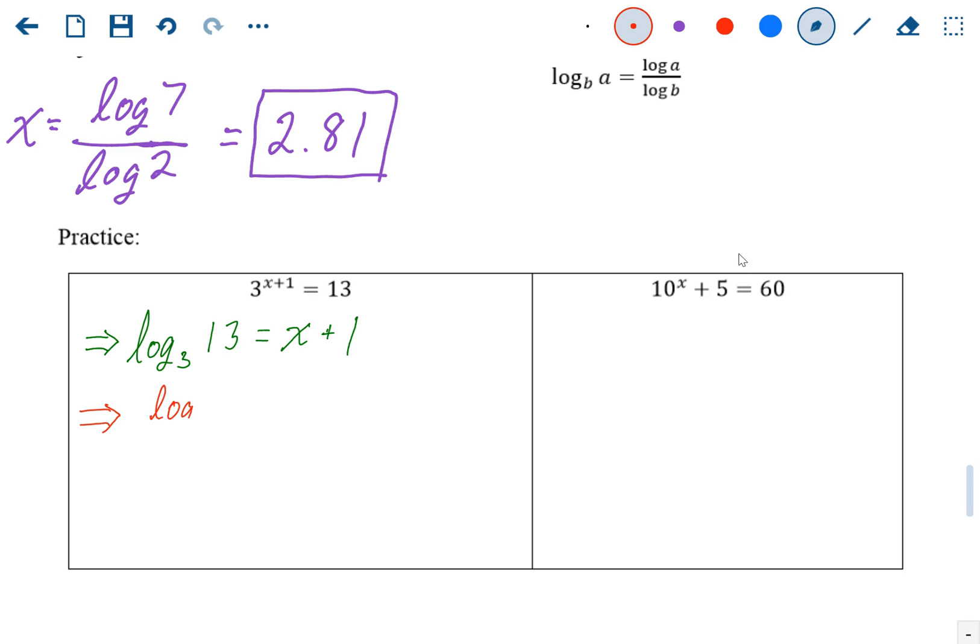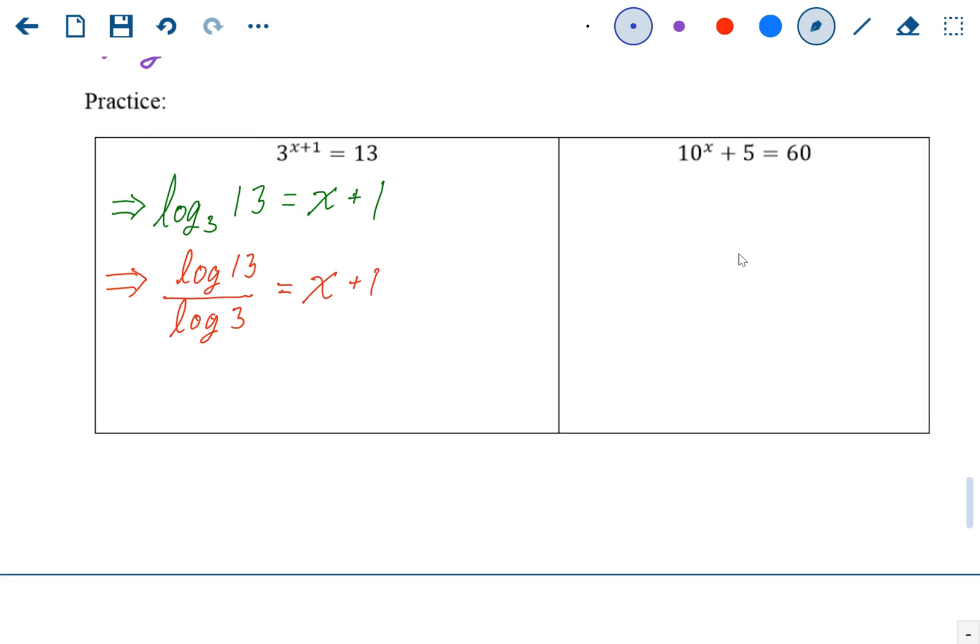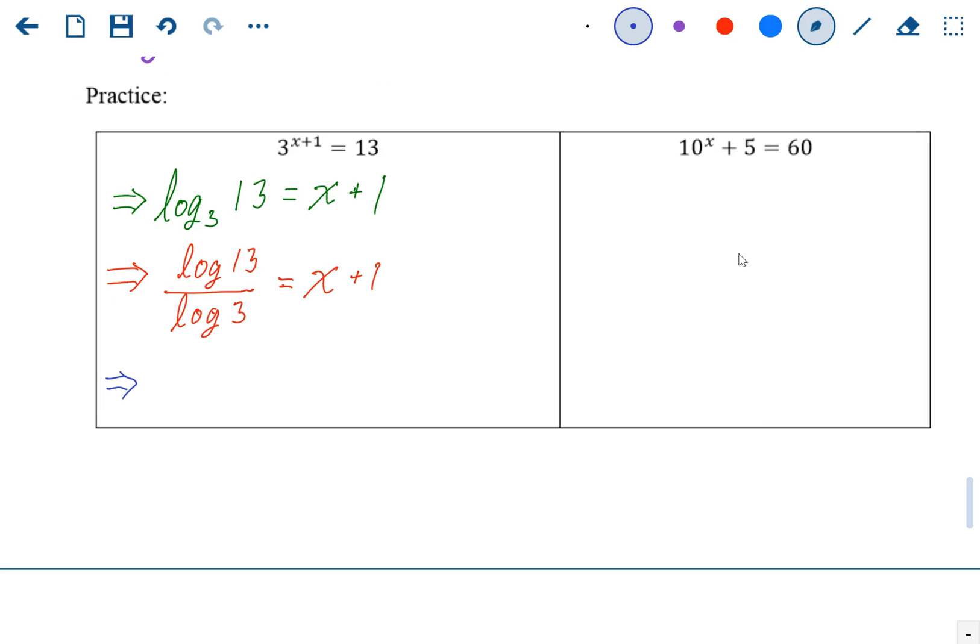And find the log of 13 divided by the log of 3, and that's going to equal x plus 1. Now log 13 over log 3 is equal to about 2.33, still equals x plus 1.